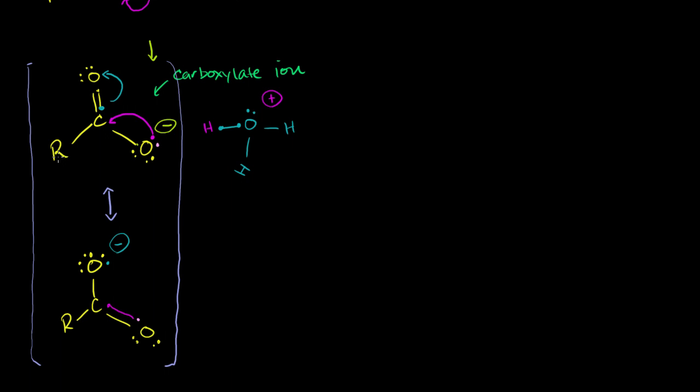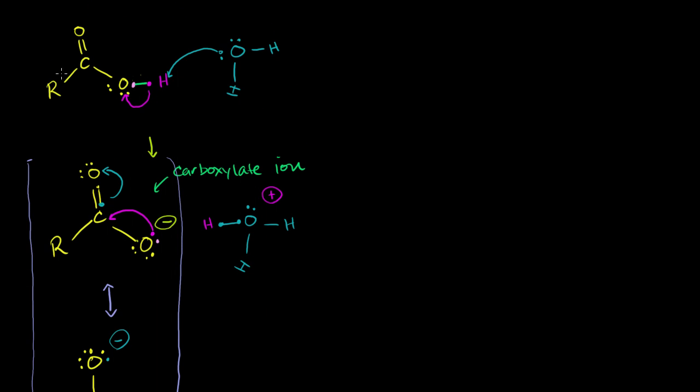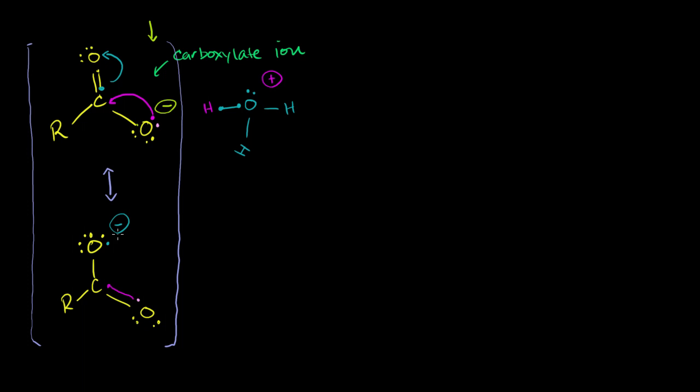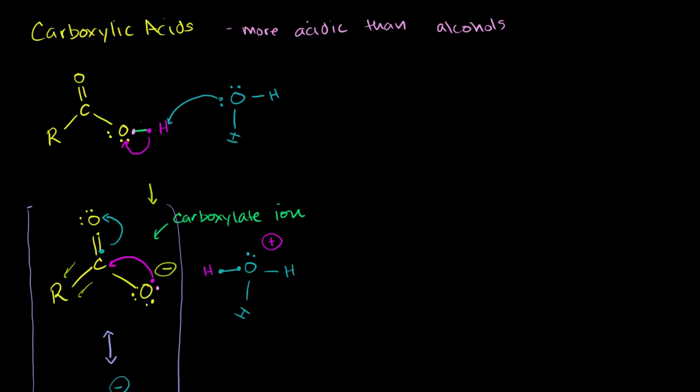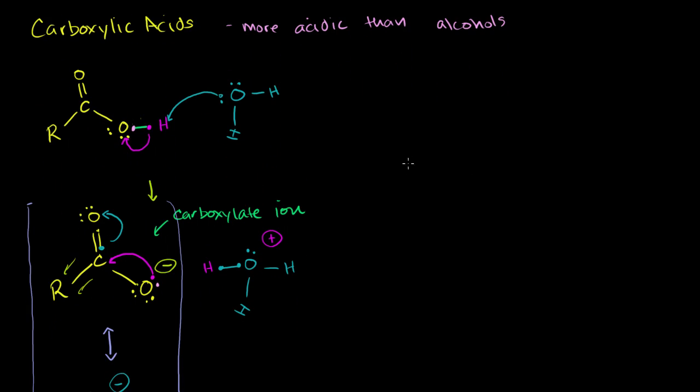And in general, if this R group right here is actually even better at withdrawing electrons, so if you put something that was really electronegative here, something that likes to hog electrons, it would make the carboxylate ion even more stable. It would make the carboxylic acid even a better acid. So if you put something electronegative here, then you could imagine that some of this negative charge that we drew in these two resonance structures can be sucked to that R group. And then that would make it even more stable and would make the carboxylic acid even more acidic.